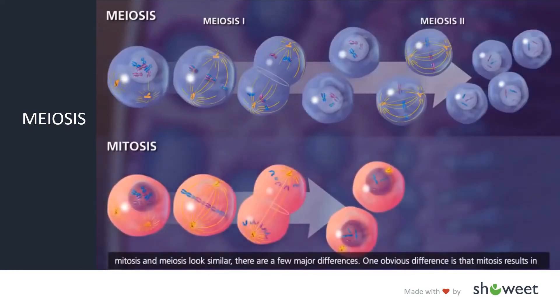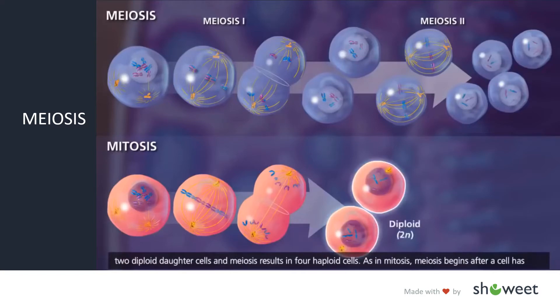Although the processes of mitosis and meiosis look similar, there are a few major differences. One obvious difference is that mitosis results in two diploid daughter cells, and meiosis results in four haploid cells.